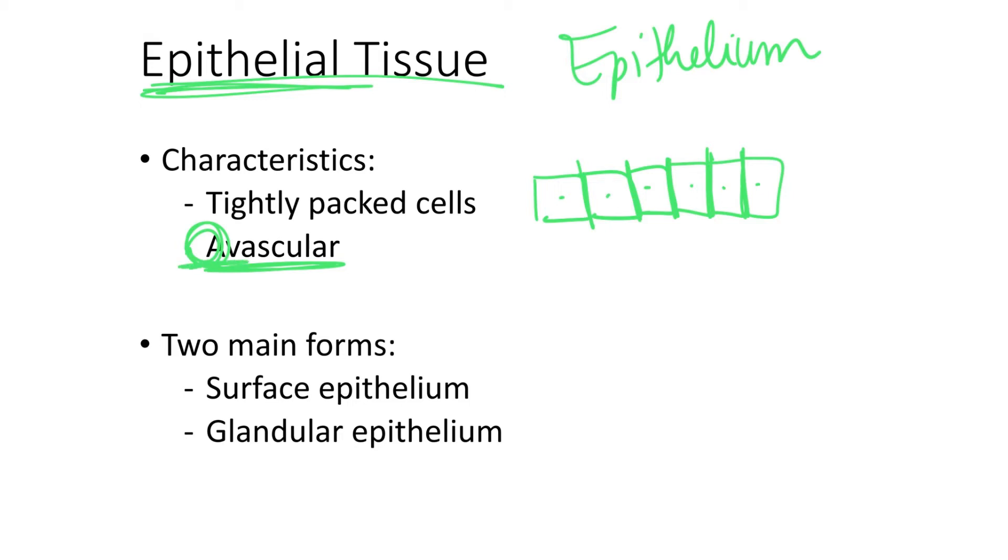Now the first question is, how do these cells survive if there are no blood vessels in the epithelial tissue? What nourishes the epithelial tissue cells is the blood vessels found in the nearby connective tissue.